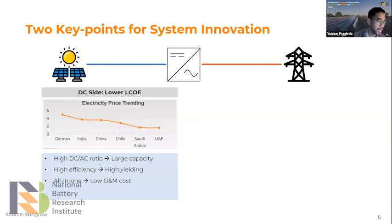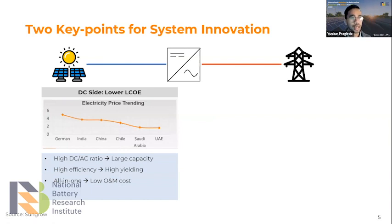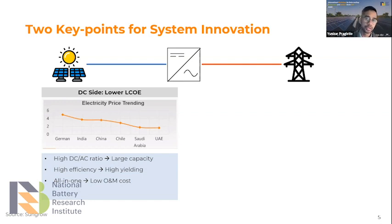Nowadays for utility scale solar plants there are two key points for system innovation. On this slide there's a DC side connected to the solar panels — the solar panels output is DC electricity, direct current. The other side is AC, connected to the grid after the inverter. That's why the inverter is crucial — it's the essential part that transforms solar panel power into power that can be accepted by the grid or building network.